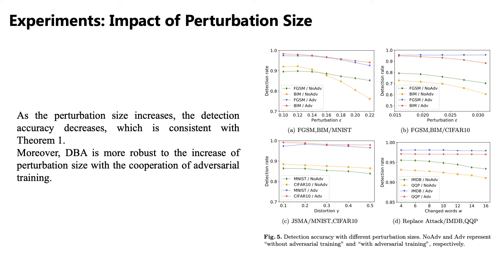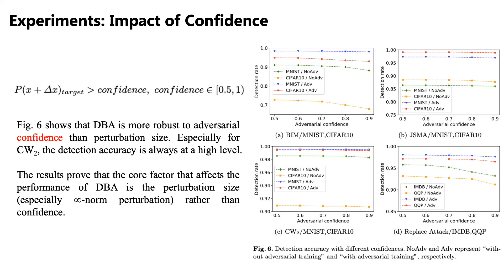Moreover, DBA is more robust to the increase of perturbation size with the cooperation of adversarial training. Regarding the impact of perturbation confidence, another essential issue is whether DBA works well on high-confidence adversarial samples. The impact of confidence is investigated on BIM, JSMA, CW_2, and Replace attack by increasing the number of iterations until the confidence of the target adversarial class satisfies the equation. Figure 6 shows that DBA is more robust to adversarial confidence than perturbation size — especially for CW_2, the detection accuracy is always at a high level. The results prove that the core factor affecting DBA performance is perturbation size, especially infinity norm perturbation, rather than confidence.